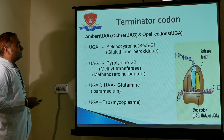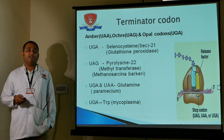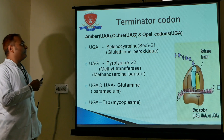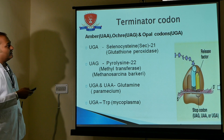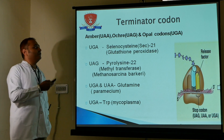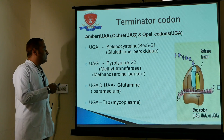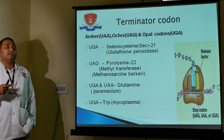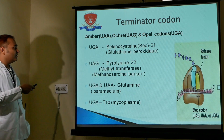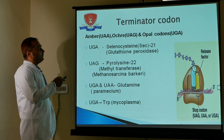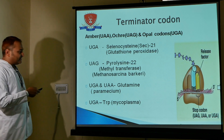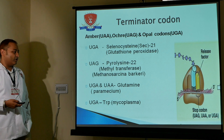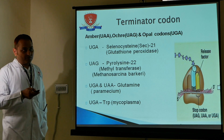Termination codons are codons that terminate the reaction. Their names are: Amber (UAG), Ochre (UAA), and Opal (UGA). Additionally, UGA codes for selenocysteine — the 21st amino acid — and UAG codes for pyrrolysine — the 22nd amino acid. So UGA codes for selenocysteine, and UAG codes for pyrrolysine in certain contexts.